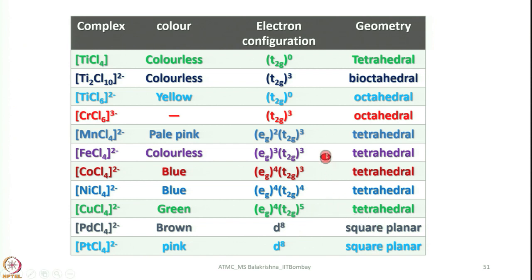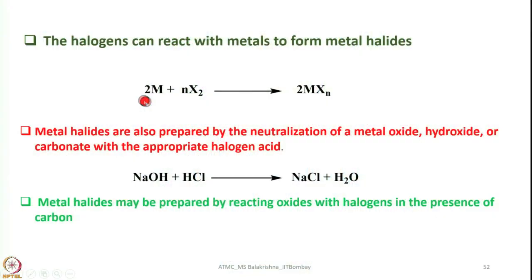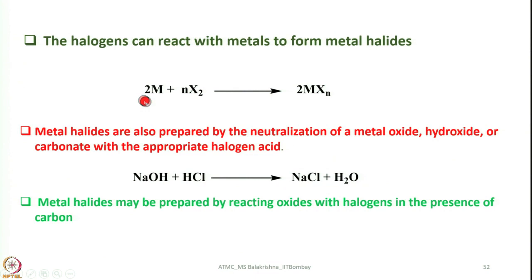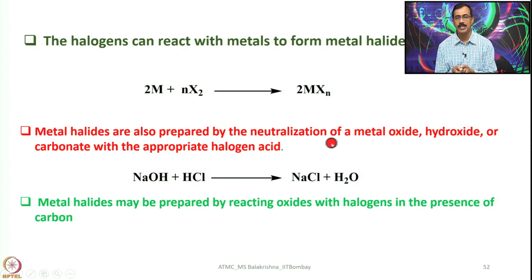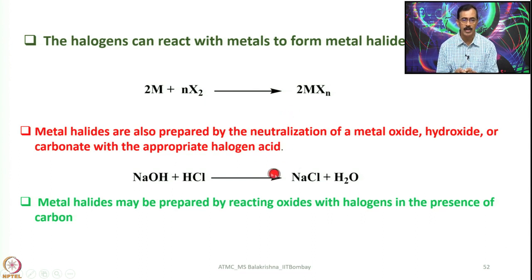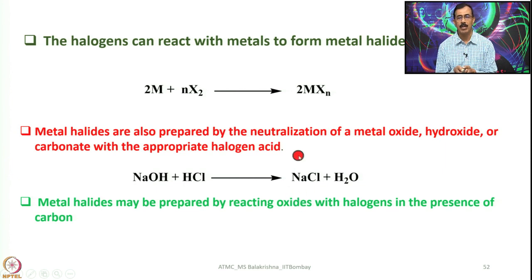After going through crystal field theory and ligand field theory, you will understand why these molecules adopt square planar geometries. As for methods to prepare halide complexes: you can directly interact metals with halogens at high temperature to generate homoleptic metal halides. Metal halides can also be prepared by neutralization of a metal oxide, hydroxide, or carbonate with the appropriate halogen acid — though this is only applicable for alkali metals and alkaline earth metals. For transition metals, metal oxides can be reacted with halogens at high temperature using carbon.